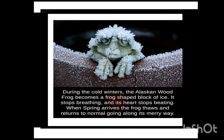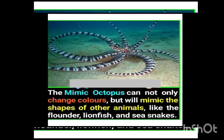Now let us see some interesting facts. We have seen many types of frogs. This is one kind of frog found in Alaska — the Alaskan wood frog — which becomes a frog-shaped block of ice. It stops breathing and its heart also stops beating during winters. When spring arrives, it retrieves its original position. This is one kind of frog found in Alaska.